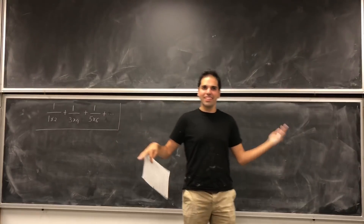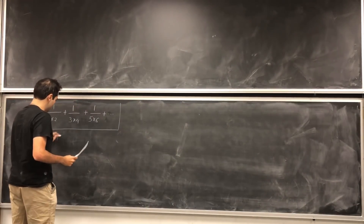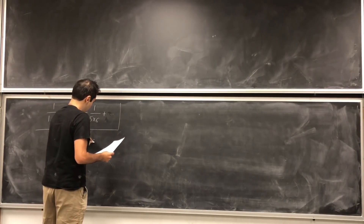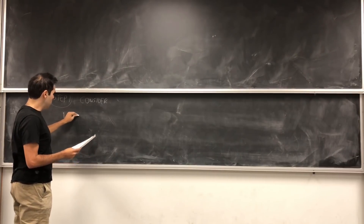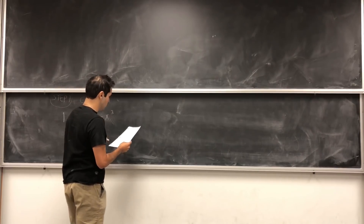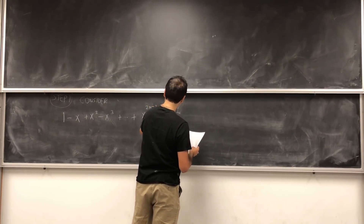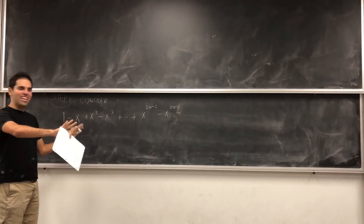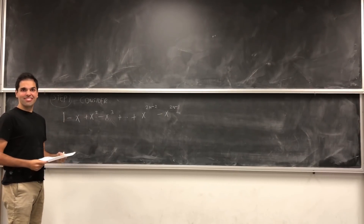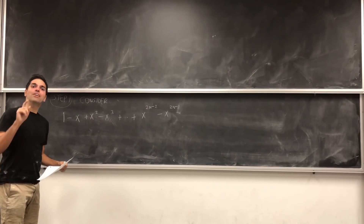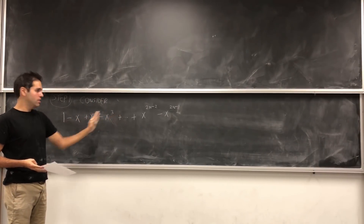For series things — very serious things — we need to consider power series. Consider this sum: 1 minus x, plus x squared, minus x cubed, etc., plus x to the 2n minus 2, minus x to the 2n minus 1. That's what we'll do for every n, because the idea is to let n go to infinity. You might say, you alternate between pluses and minuses, surely that cannot be right. But in fact, you'll see magically this will turn out to be correct — it's just a finite polynomial.